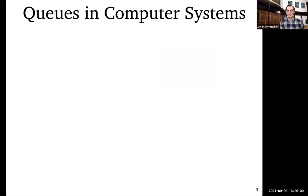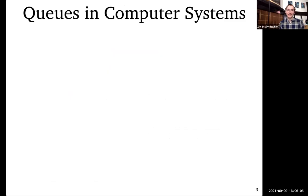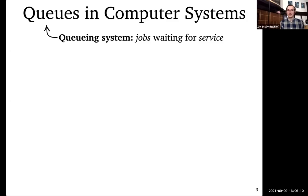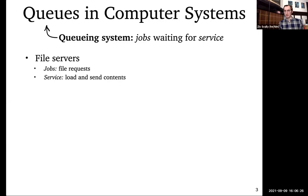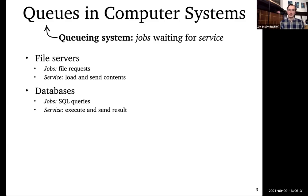Today is going to be a lot about queues in computer systems. A queue is any setting where you have jobs of some type waiting for service of some type. In computer systems, there are lots of examples. A file server is a queuing system — jobs are requests for files, and serving means loading the file from disk. Databases are another example — jobs might be SQL queries, and serving means parsing, compiling, executing the query, and returning the result.